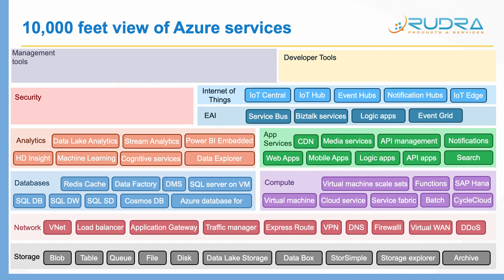And in terms of Internet of Things, you have IoT Central, IoT Hub, and Event Hubs. When it comes to Event Hubs, it is specifically for events — if you have millions of events coming in, you can use Event Hubs to stream and analyze them. Service Bus is more focused on messages, whereas Event Hubs is more focused on events. And you can have Notification Hubs if you want to send push notifications. And you can use IoT Edge if you want to do edge analytics before the data even comes to the cloud.